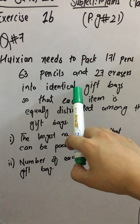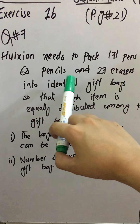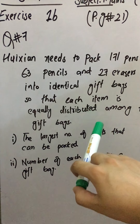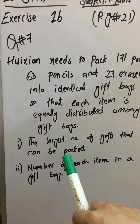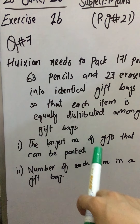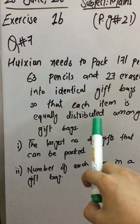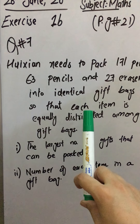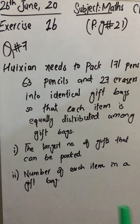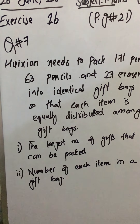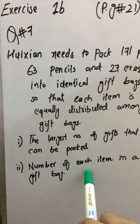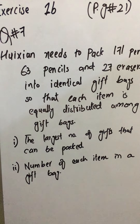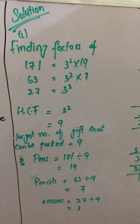Hookzian is a person's name. He needs to pack 171 pens, 63 pencils, and 27 erasers into identical gift bags — identical meaning same size. He wants to distribute each item equally. We need to find the largest number of gifts that can be packed following the rule that each item is equally distributed, and also the number of pens, pencils, and erasers in each gift bag.